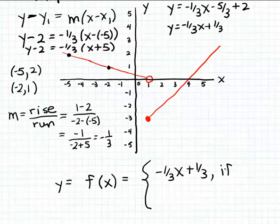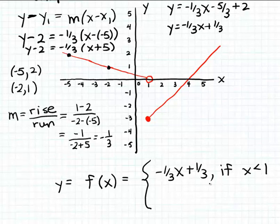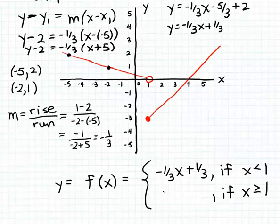We'll use this piece of the formula for x values that are less than 1, because this piece of the graph on the left extends from negative infinity up to x = 1 but does not include x = 1. So we use this formula when x < 1. The second formula will apply for inputs greater than or equal to 1, since the second piece of the graph begins at x = 1 and continues to positive infinity.